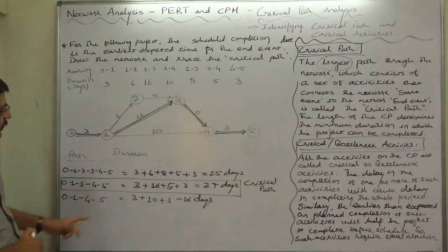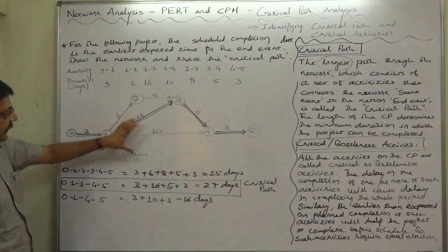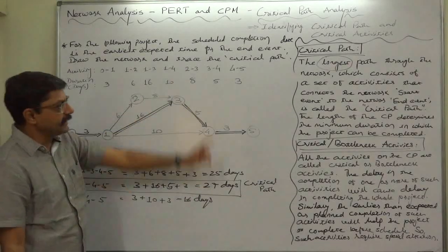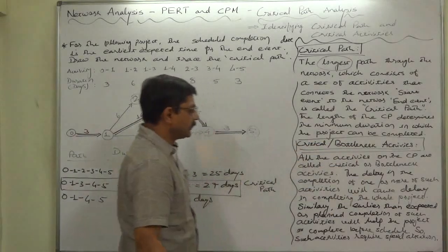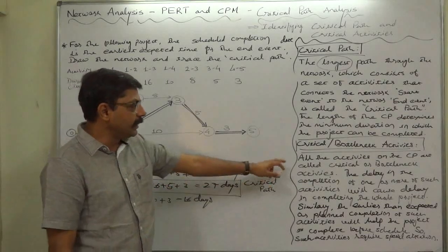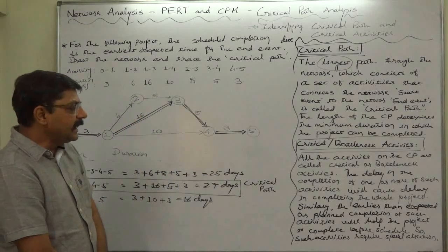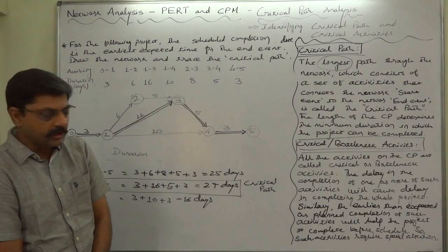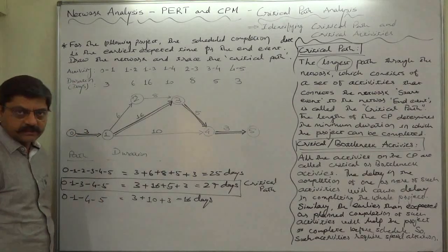The longest path from start event to end event covering various activities is the critical path, and 27 days is the minimum duration in which this project can be completed. Now, another point: critical or bottleneck activities. All the activities on the critical path are called critical or bottleneck activities. A delay in the completion of one or more of these critical or bottleneck activities will cause delay in completing the whole project.